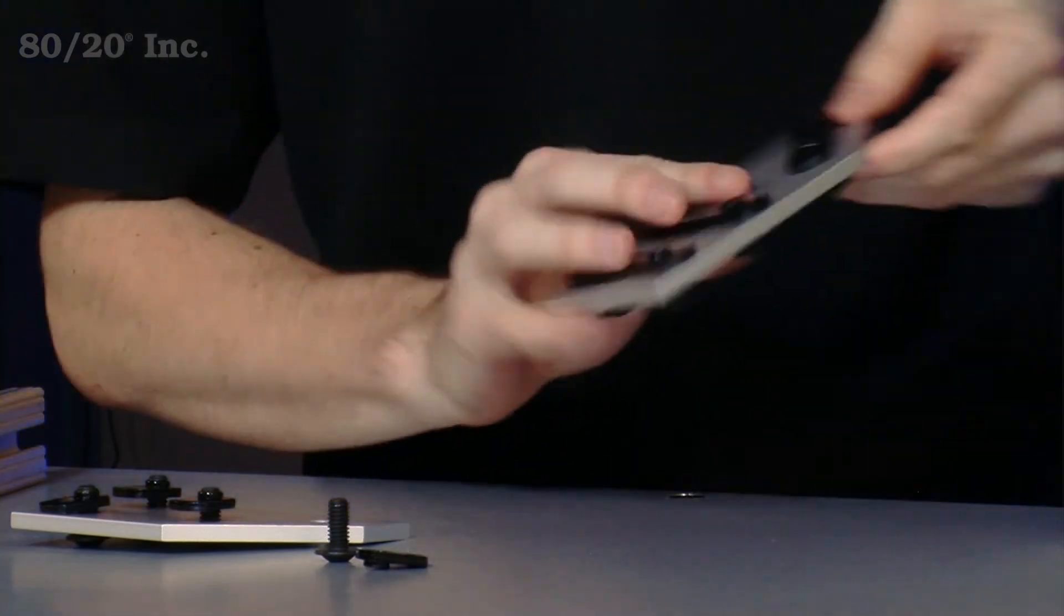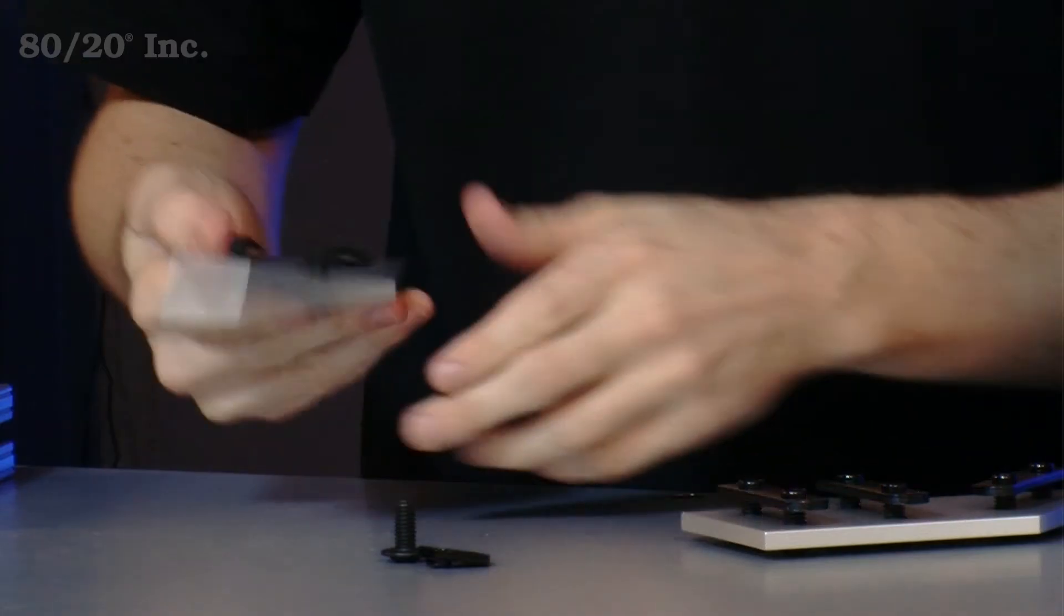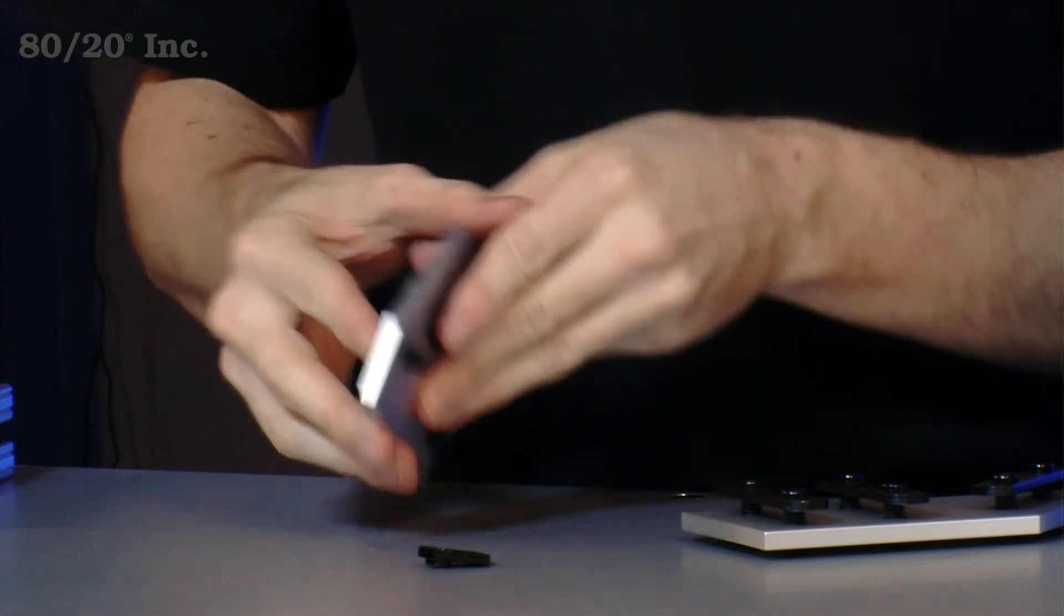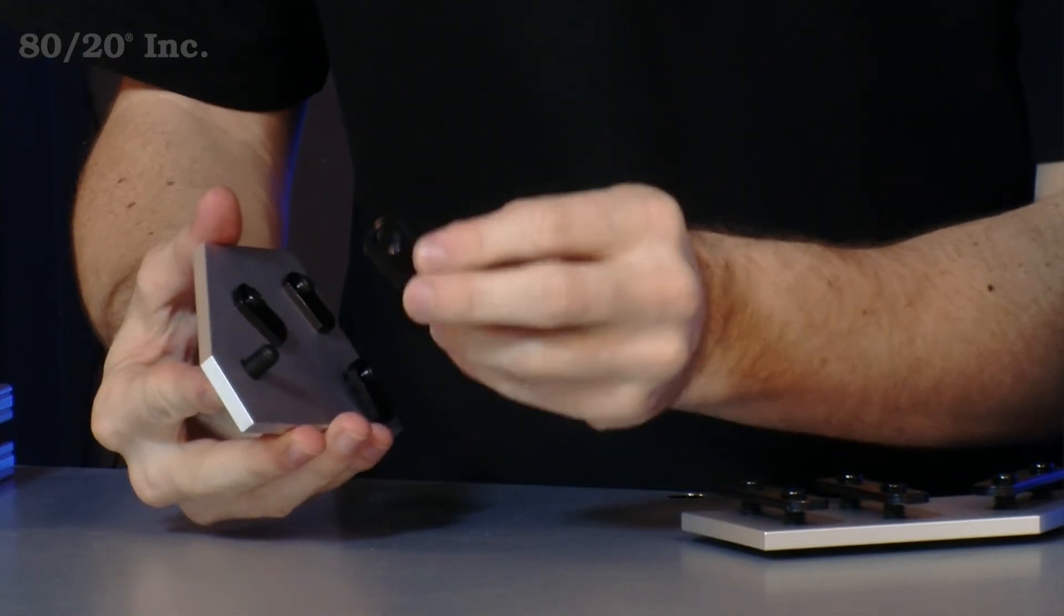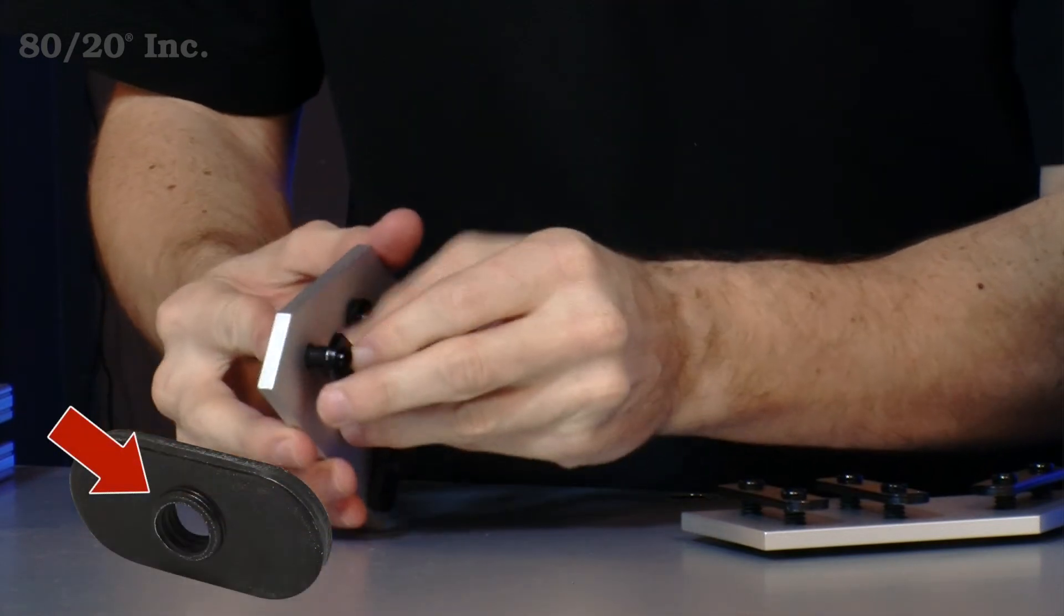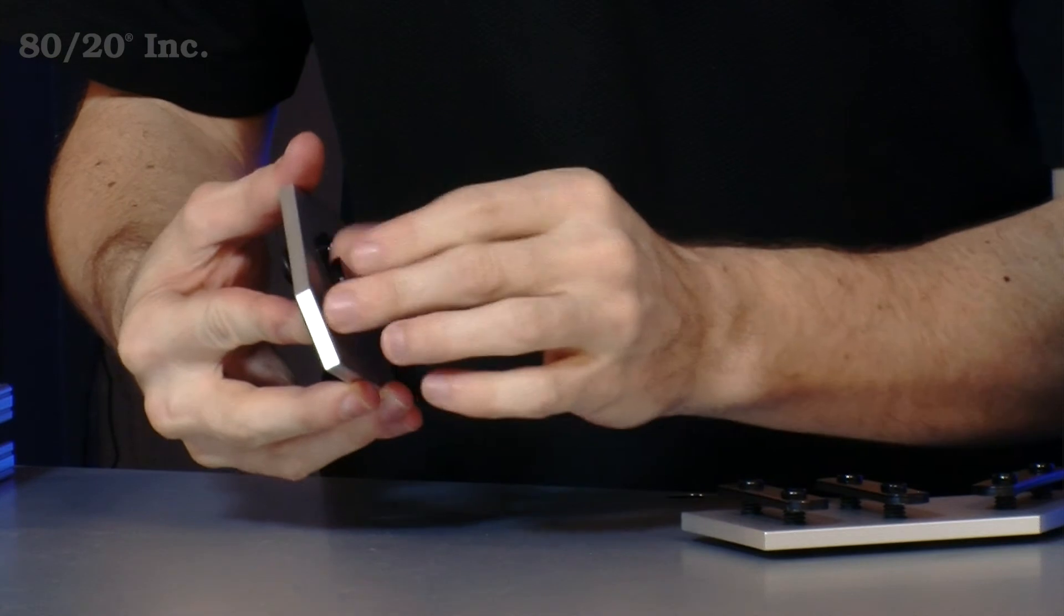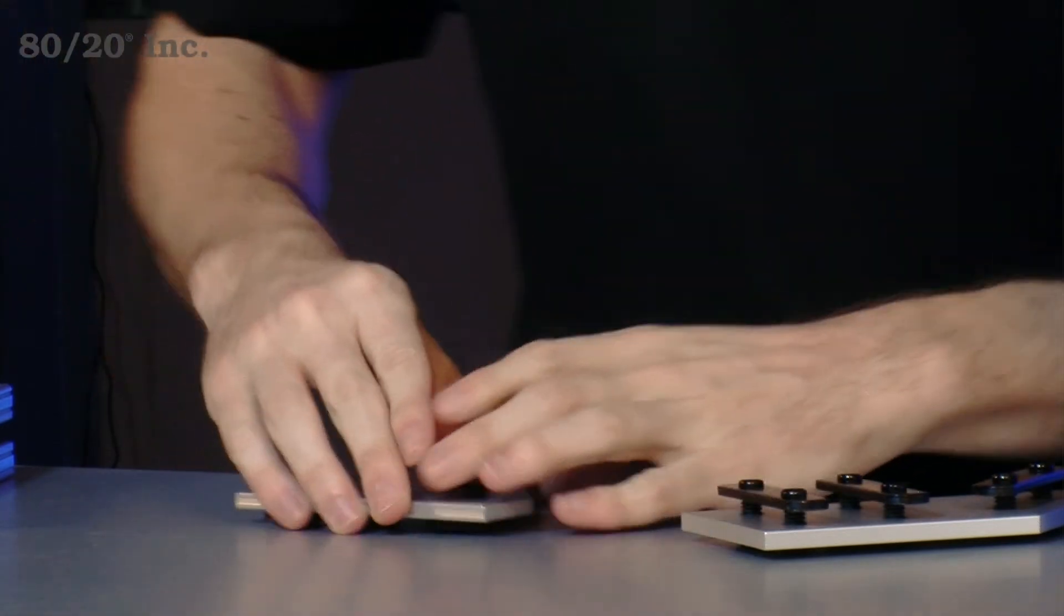Now to get started, we'll take our angle plate that's partially preloaded and finish it up with one last bolt and one last T-nut. Now the important thing with the T-nut is to make sure the pilot hole is facing downwards.